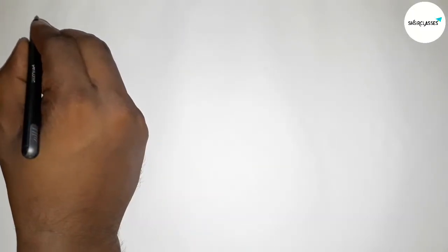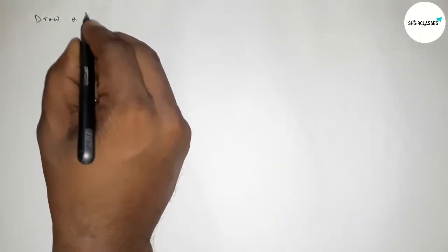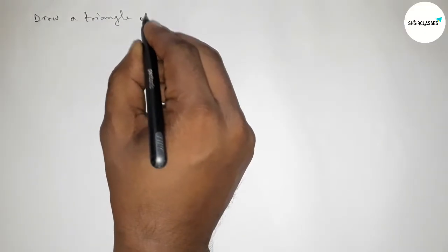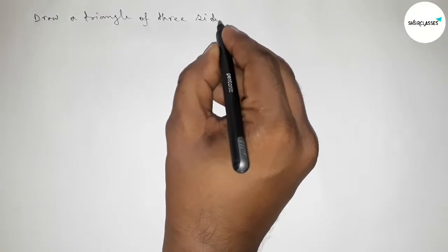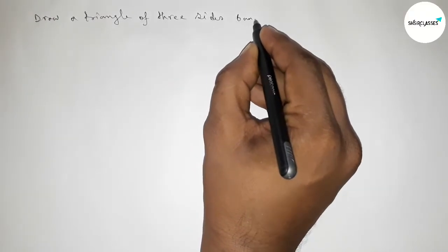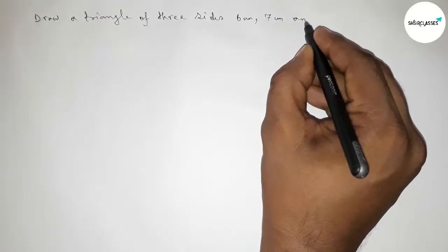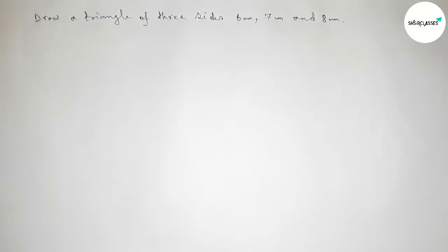Hi everyone, welcome to SI Share Classes. Today in this video we have to draw a triangle of three sides: 6 centimeter, 7 centimeter, and 8 centimeter in an easy way. Please watch the video till the end.